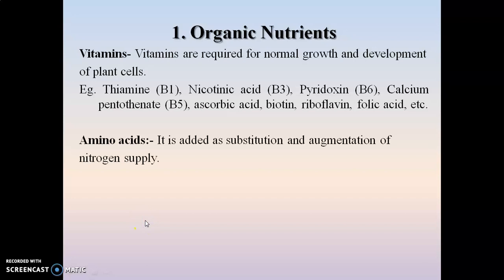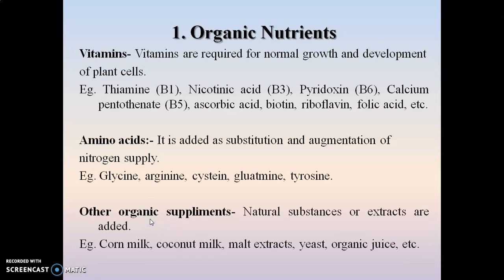Amino acids are added as a substitution or augmentation of nitrogen supply, since plant cells can absorb nitrogen present in amino acids. Amino acids like glycine, arginine, cysteine, glutamine, and tyrosine are added as a substitute for nitrogen. Other organic supplements such as natural substances or extracts — including coconut milk, yeast, malt, and organic juices — are also added in the nutrient media for growth purposes.